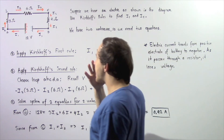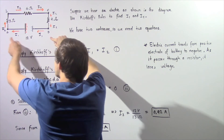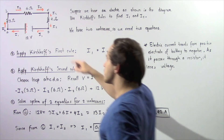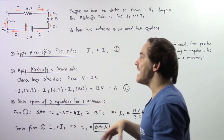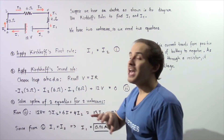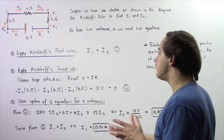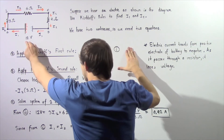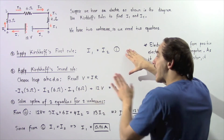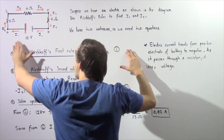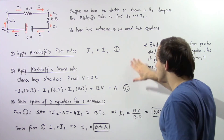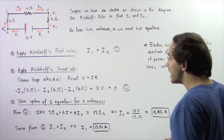Finally, examining section D to A, we have electric current I1. As it travels from D to A, it goes from the negative to the positive side of the battery, so it gains voltage — a gain of 12 volts, giving us positive 12 volts. By Kirchhoff's 2nd rule, the sum of all the changes in voltage is equal to zero. Let's call this equation 2.